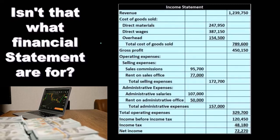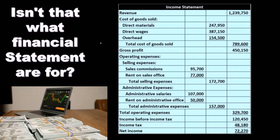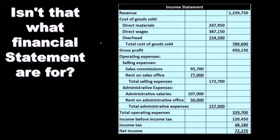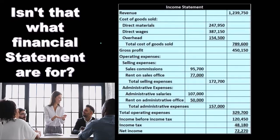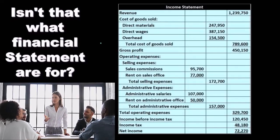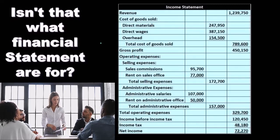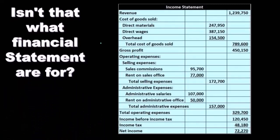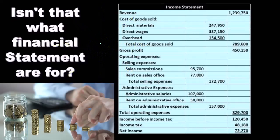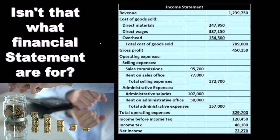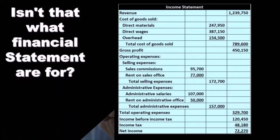When we think about a normal income statement, we want to consider it from the perspective of an outside user. That doesn't mean a managerial accountant doesn't use the same information, but generally accepted accounting principles are designed mainly for the outside user. The outside user wants to see what really happened over the last year — the big picture — so they can make investment decisions.